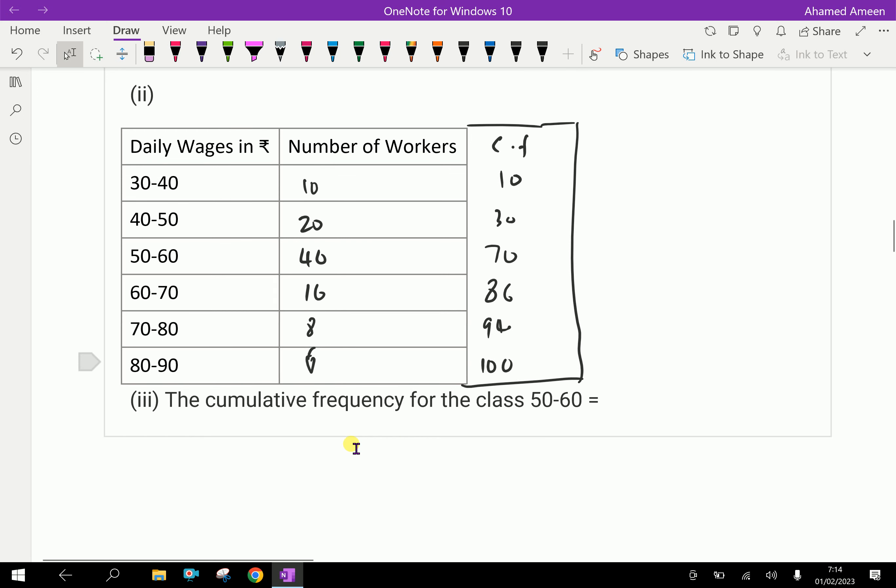Now, the cumulative frequency for the class interval 50 to 60. 50 to 60 is 70. Answer is 70.